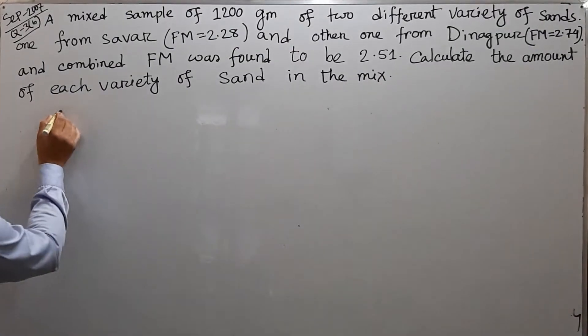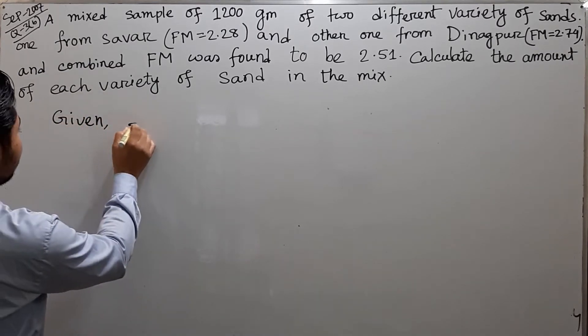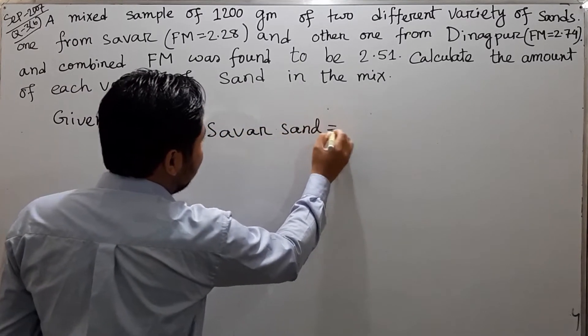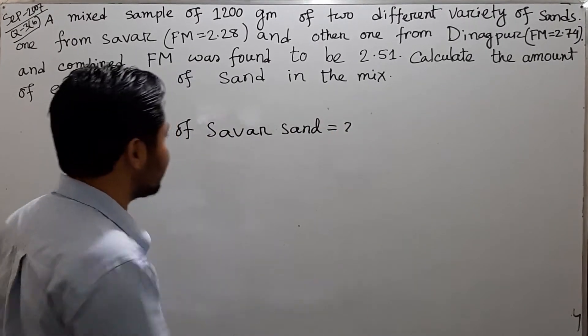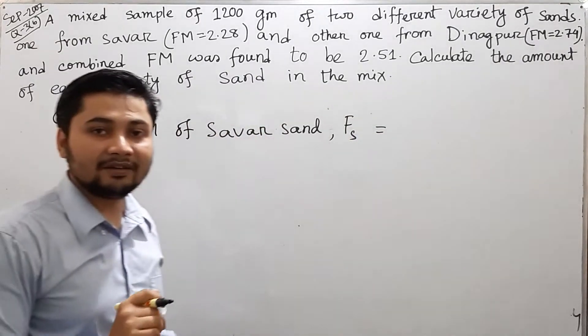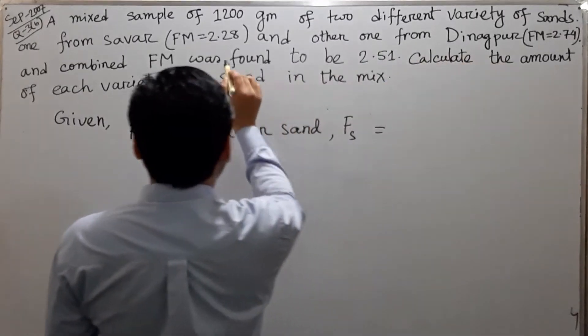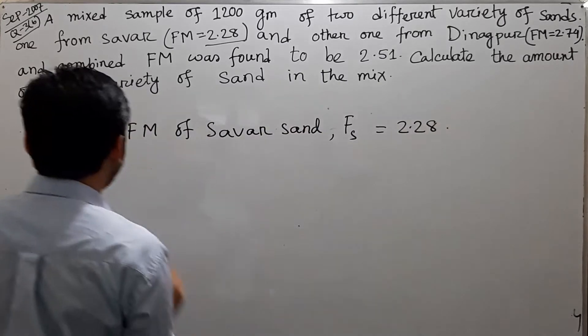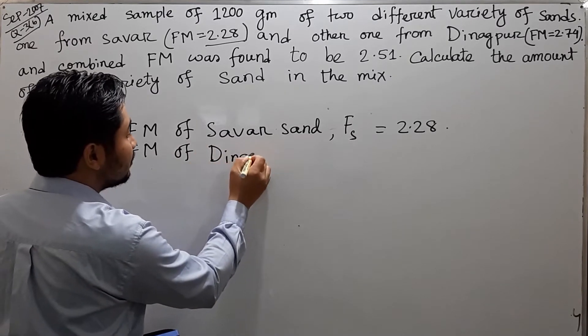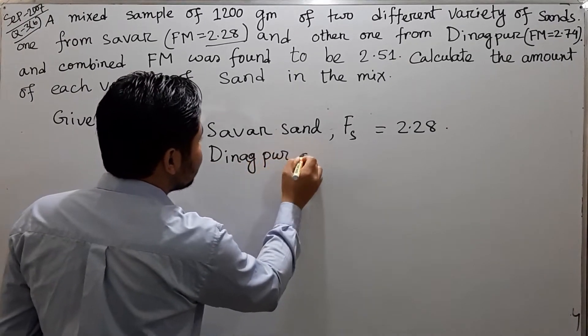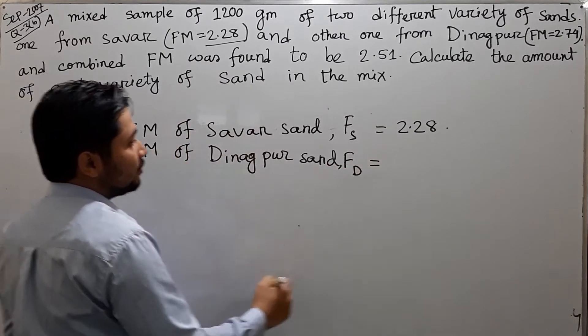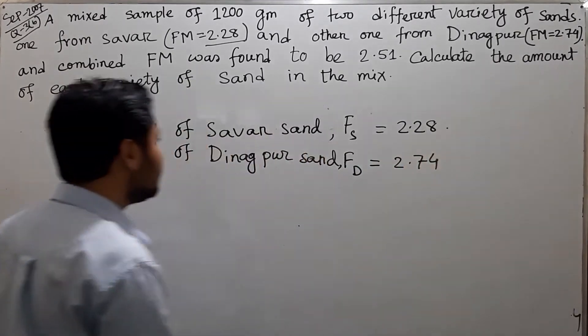Given: FM of Savar sand Fs equals 2.28, and FM of Dinajpur sand Fd equals 2.74.